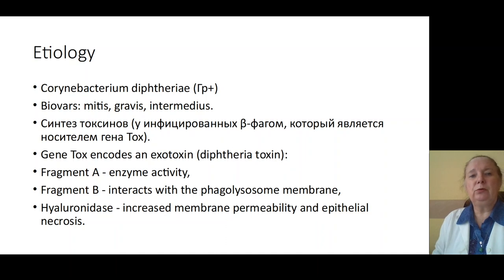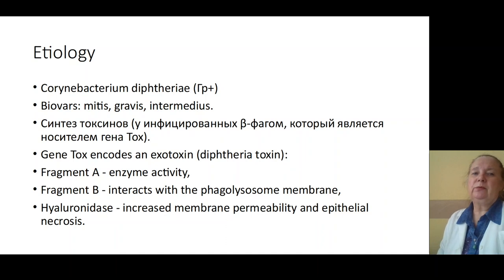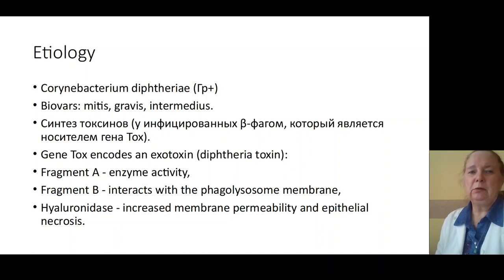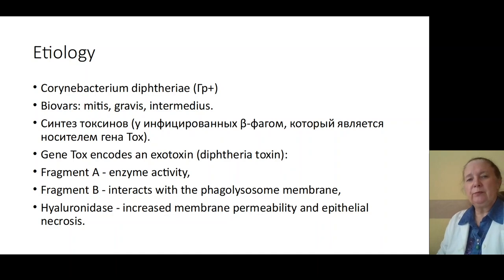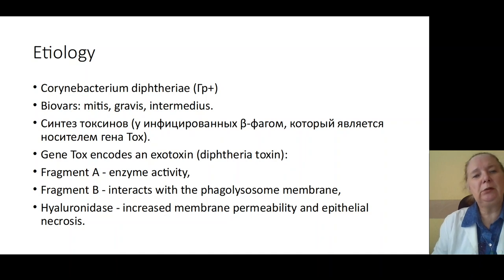It is the formation of gene tox, which integrates into the genes of bacteria and codes for the synthesis of diphtheria toxins — the synthesis of exotoxins. It consists of fragment A and fragment B. Fragment A has enzymatic activity, and fragment B interacts with the membrane of phagocytes and macrophages, causing depression of the immune response. And neuraminidase is exotoxin 2, characterized by increasing permeability of biological membranes and causing epithelial necrosis of mucous membranes.